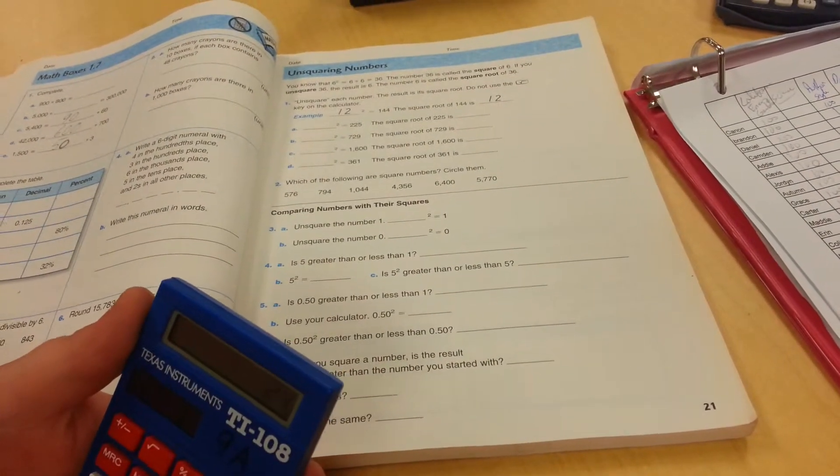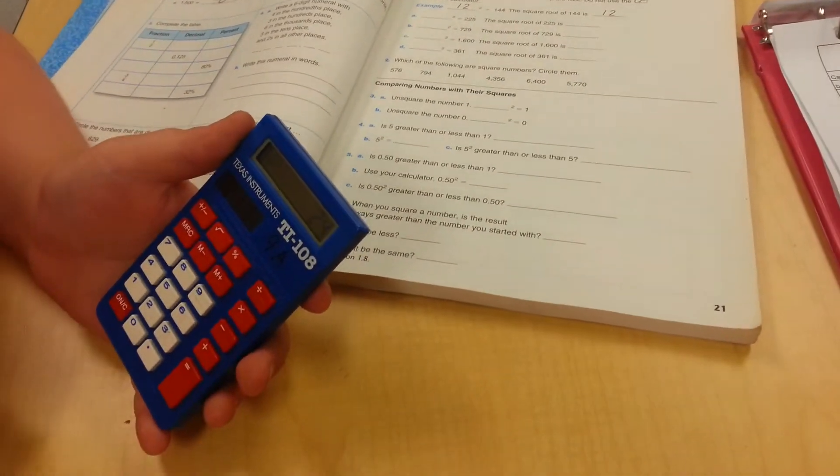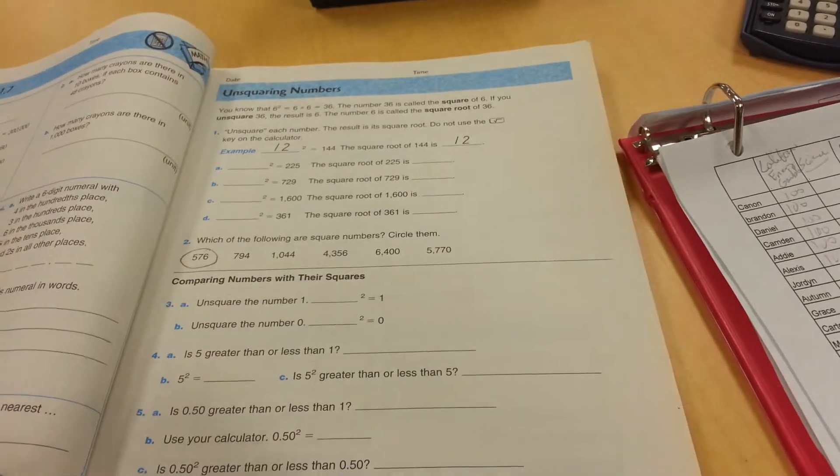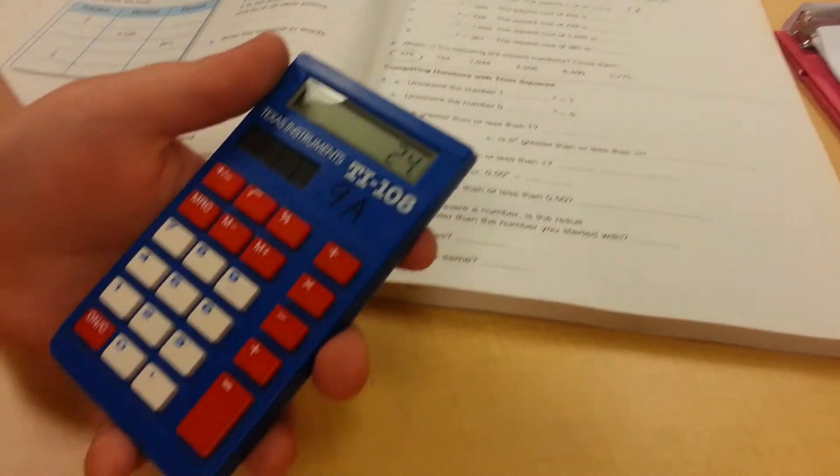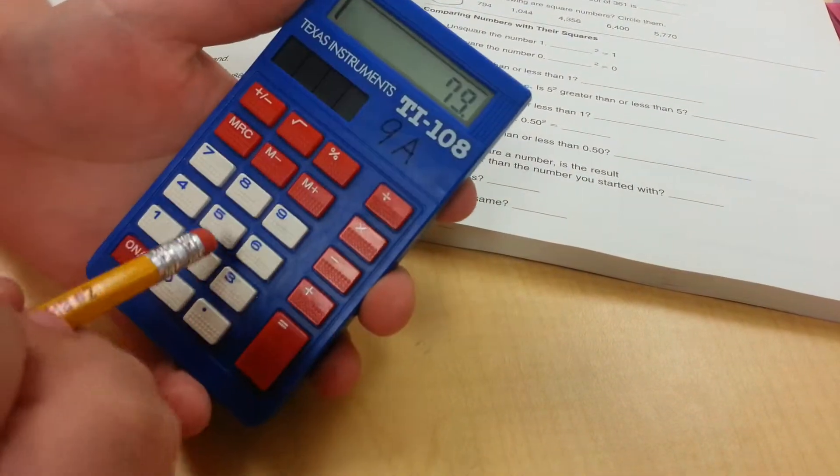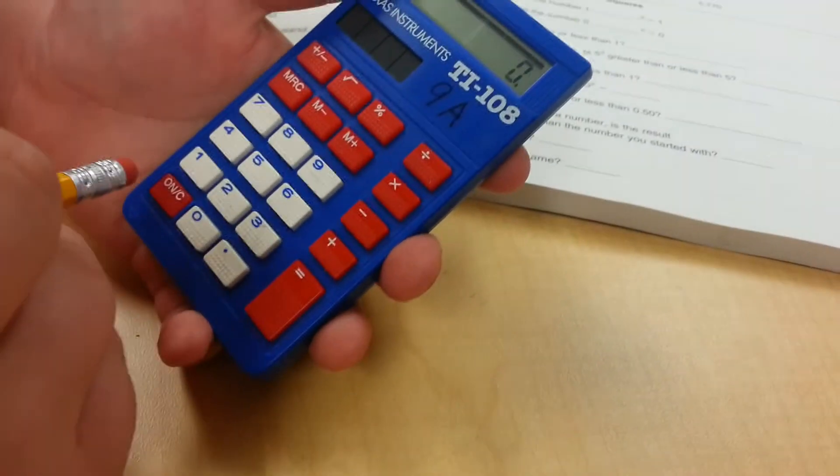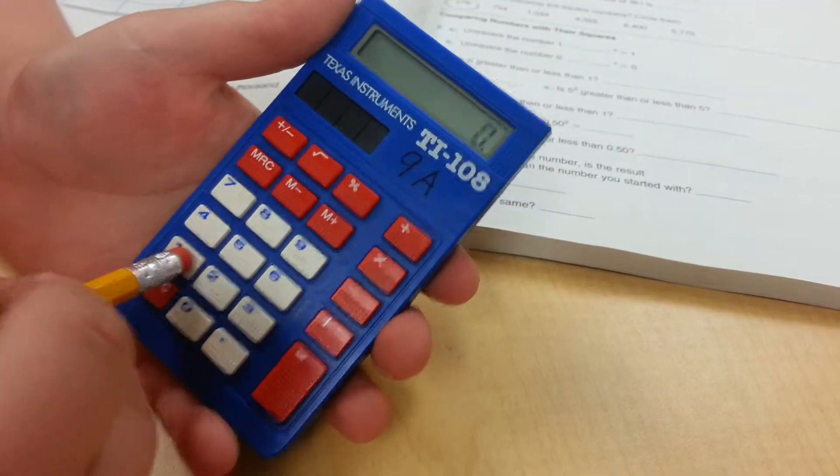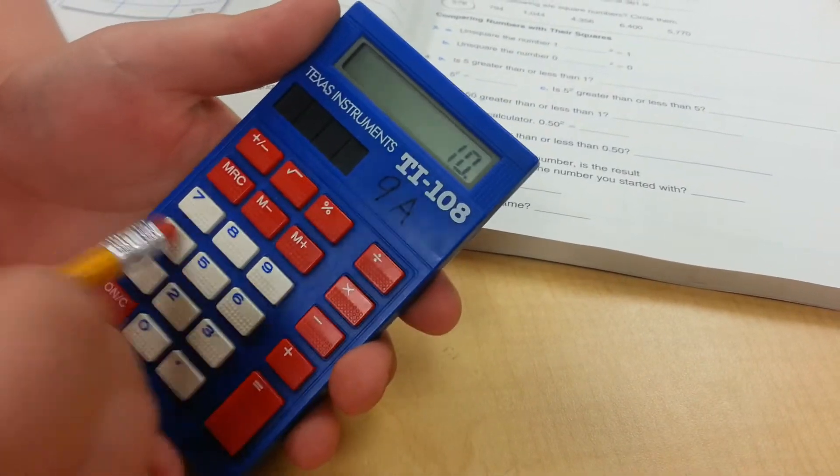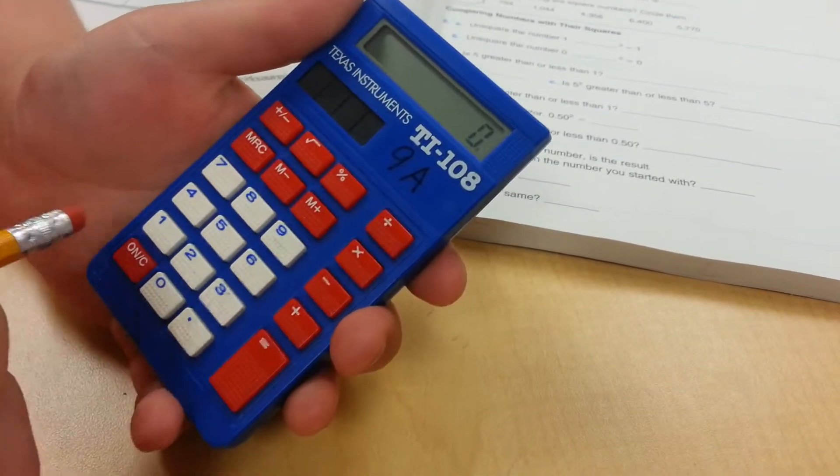Circle it. What about the 794? 1,044. Nope. 4,356, square root. Nope.